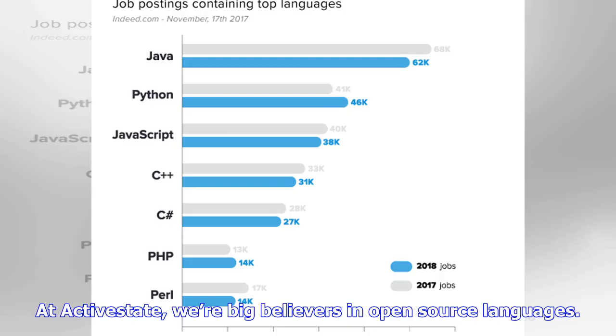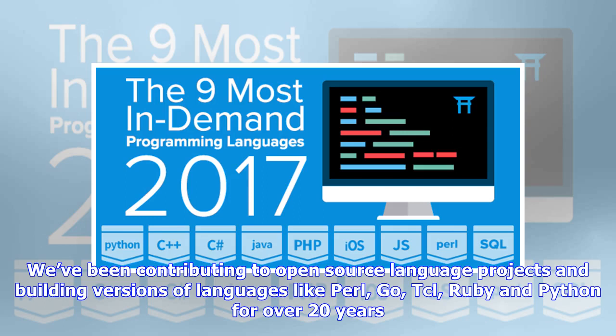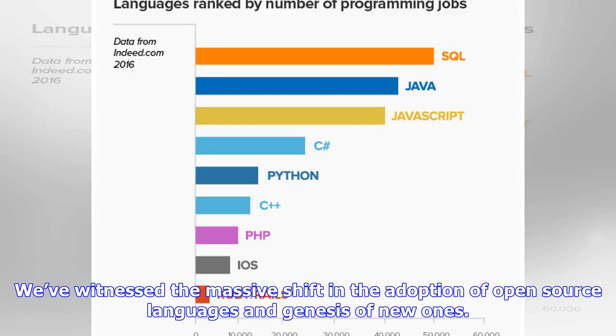At ActiveState, we're big believers in open source languages. We've been contributing to open source language projects and building versions of languages like Perl, Go, TCL, Ruby and Python for over 20 years. We've witnessed the massive shift in the adoption of open source languages and the genesis of new ones.